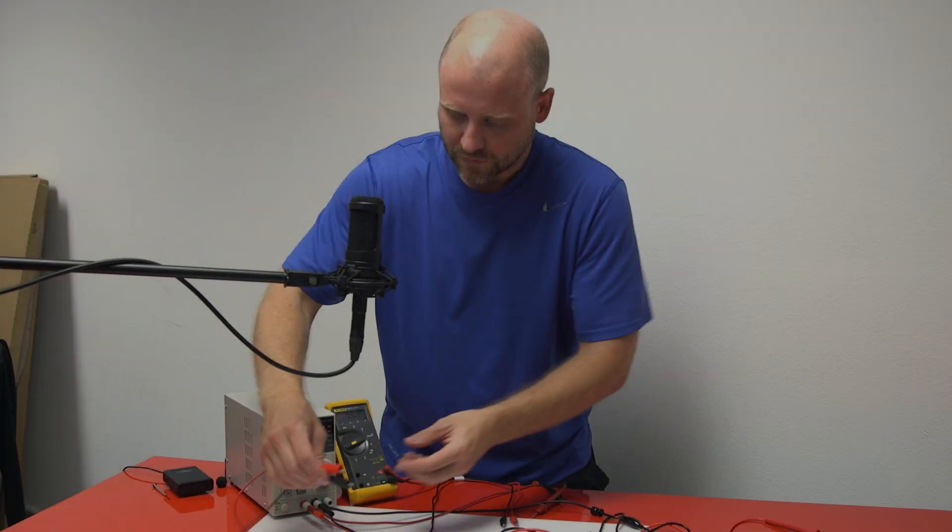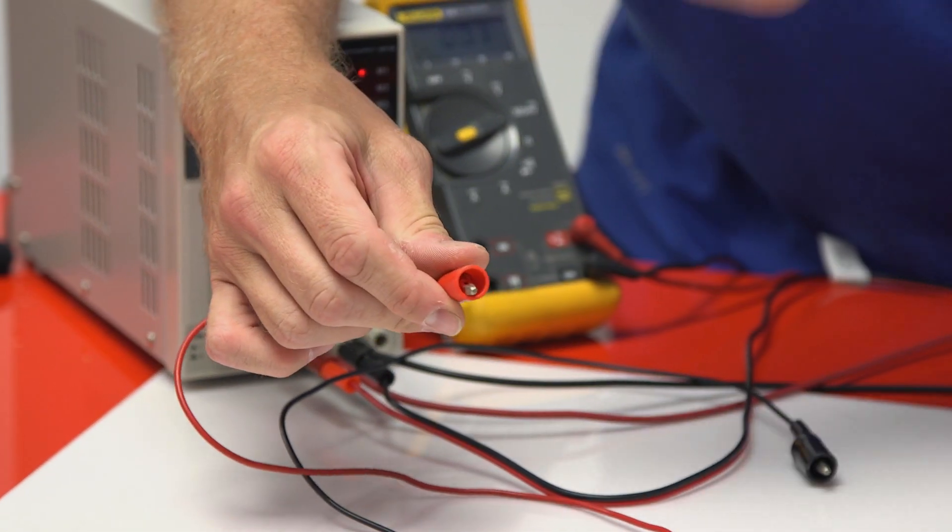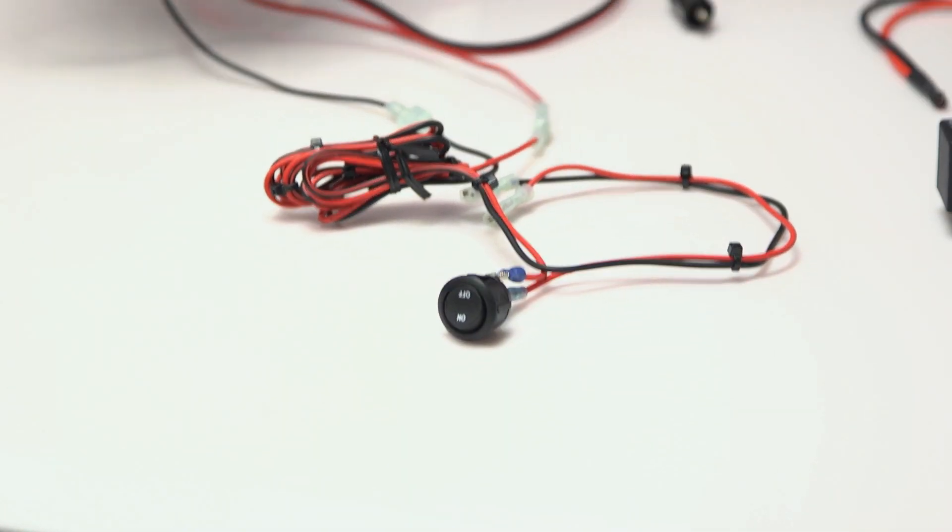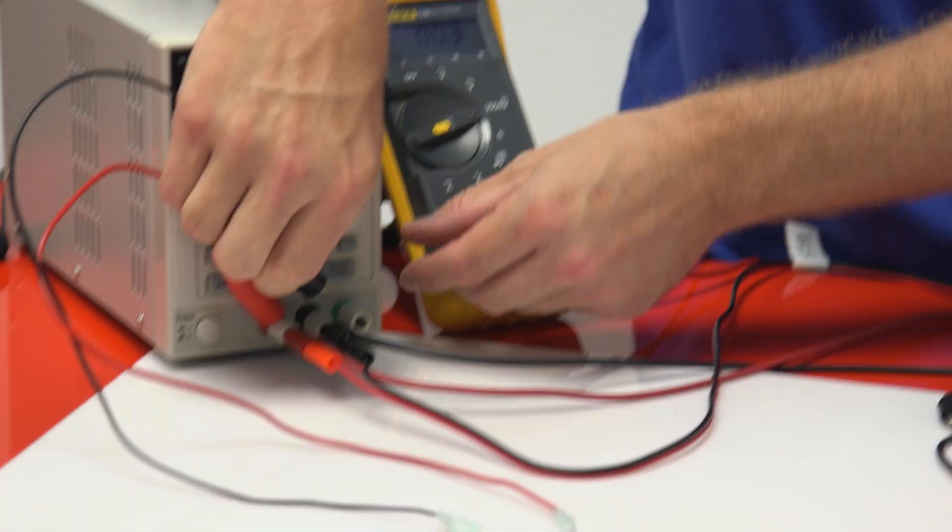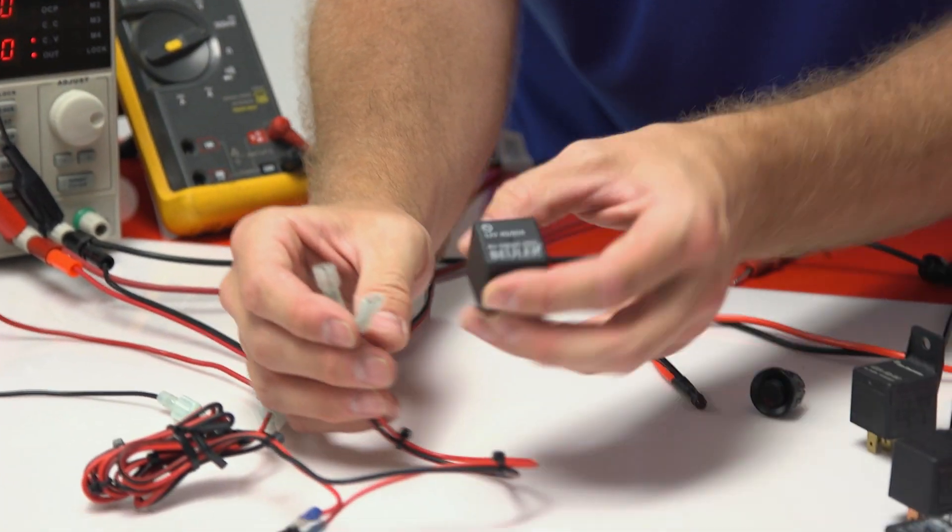So we'll go ahead and start wiring. We're going to make a positive connection and all that's going to do is run electricity through the switch. The switch obviously switches positive, and then we have our ground right here and that's going to be our coil ground. So we're just going to connect it to our relay.